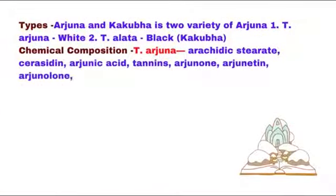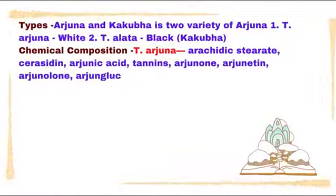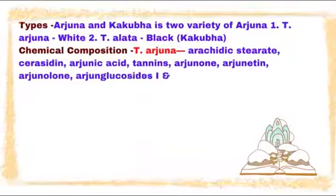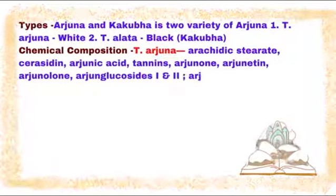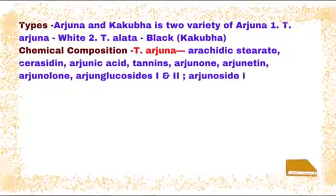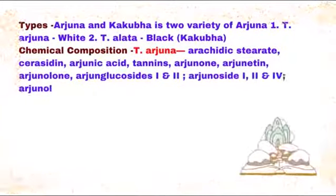Chemical composition of Terminalia Arjuna: Arachidic acid, Stearic acid, Saracidine, Arjunic acid, Tannins, Arjunone, Arjunatin, Arjunalone, Arjun glucosides 1 & 2, Arjunocyte 1, 2 & 4, Arjunolic acid, and Tannins.